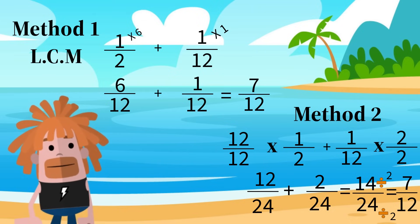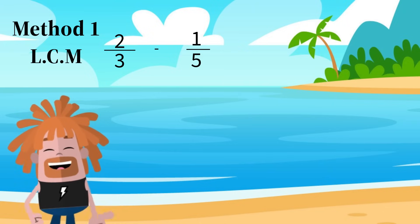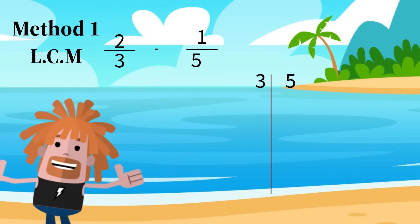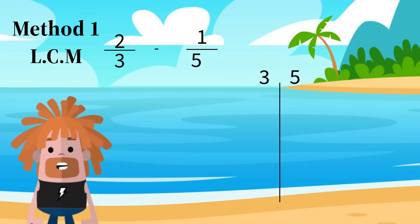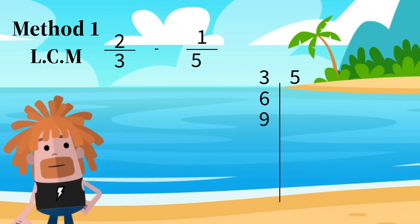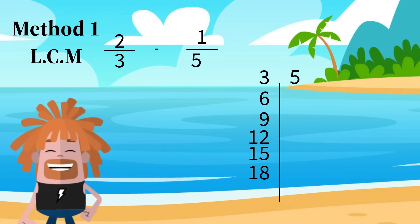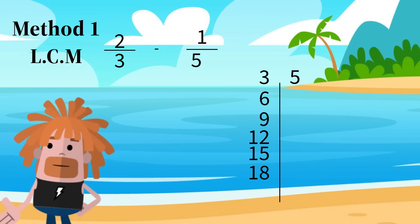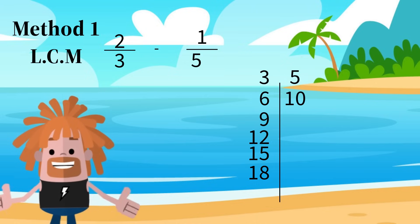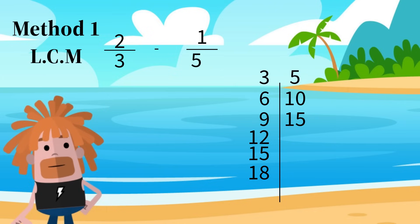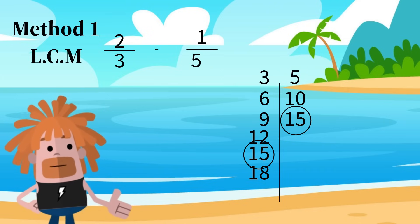Let's do another example using Method 1: 2 thirds minus 1 fifth. The multiples of 3 are 3, 6, 9, 12, 15, and 18. The multiples of 5 are 5, 10, 15. We stop here because we have found our common multiple. The common multiple is 15.